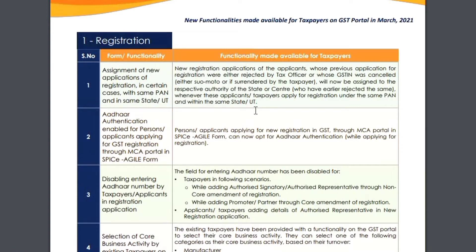Number three is about disabling of the Aadhaar number for the taxpayer or applicant in the registered application. The Aadhaar number will be disabled in specific sequences: when you add authorized signatories or representatives through non-core amendment of registrations, when adding promoters or partners through core amendment, and when applicants or taxpayers add their authorized representative details in a new registration application. For all these cases, Aadhaar will be disabled.